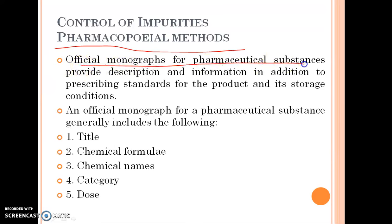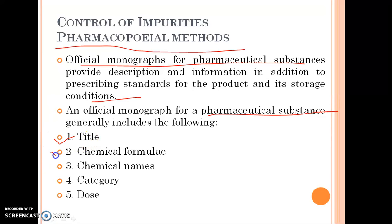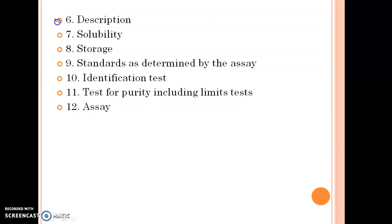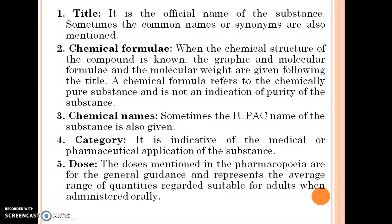The official monograph of pharmaceutical substances provides description and information, in addition to prescribing standards for the product and its storage conditions. The official monograph for a pharmaceutical substance generally includes: title, chemical formula, chemical name, category, description, solubility, storage, standards as determined by the assay, identification test, test for purity, and assay.